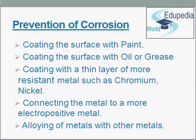Third, coating with a thin layer of a more resistant metal such as chromium, nickel, or zinc on the surface of metals or metallic materials. Fourth, connecting the metal to a more electropositive metal. Metals do not get corroded when connected to a more electropositive metal. Fifth, alloying of metals with other metals also prevents corrosion. Iron is alloyed with nickel and chromium.